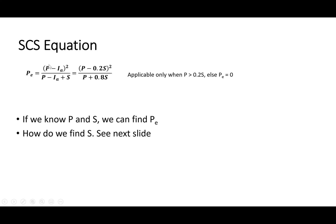In this expression we have total cumulative rainfall, initial abstraction, and maximum soil retention S. If we know S and IA we can find excess rainfall using this expression. SCS also found that initial abstraction for most studied watersheds equals 20 percent of S, so we can simplify the expression further and end up with an equation where S is the only unknown — if we know total rainfall we can find excess rainfall if we know S.